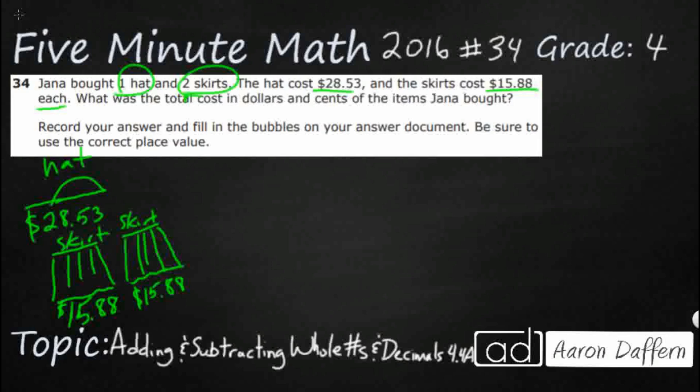If we want to represent this with a strip diagram, it would kind of look like this. We are looking for the total cost. That's the unknown, is that total cost. In our strip diagram, that goes up on the top. But we do know what she did buy. She bought a hat for $28.53 and then two skirts, $15.88 and $15.88.